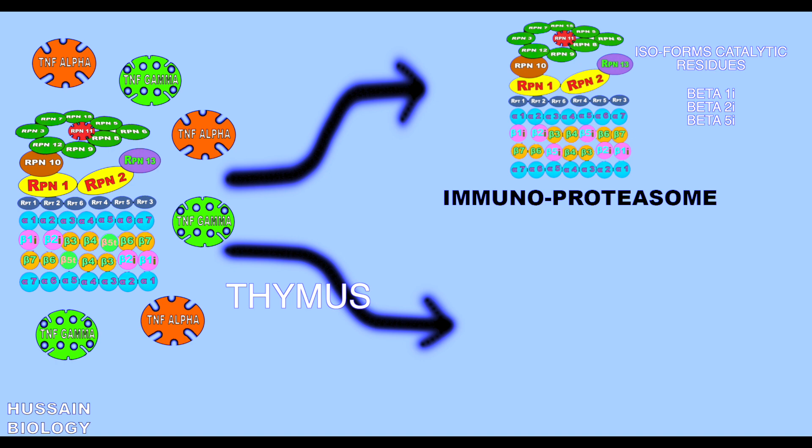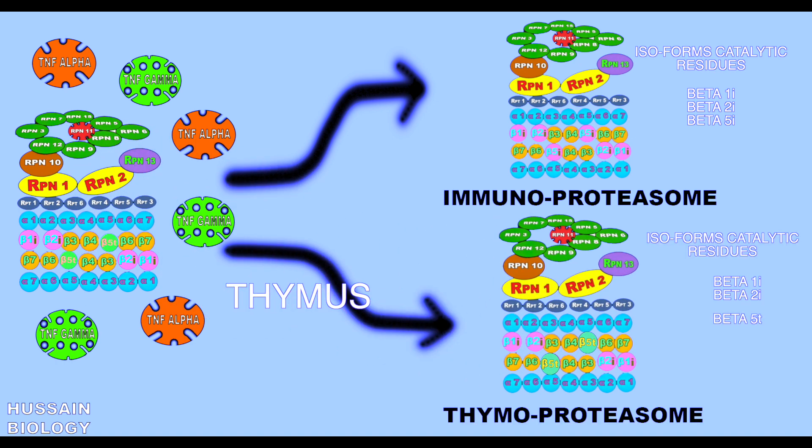So this is the brief outlook of formation of immunoproteosome and thymoproteosome with the differences in the structure of catalytic isoforms from beta subunit rings.